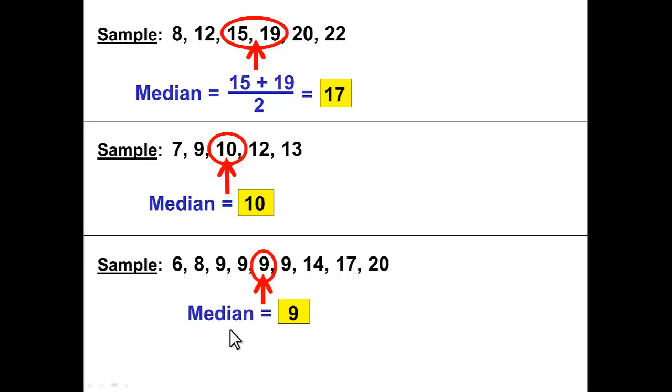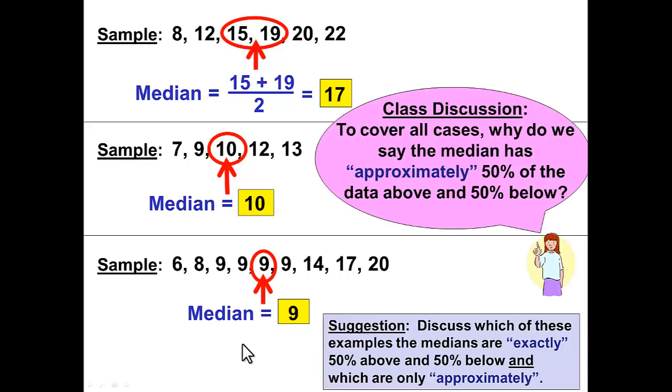Look at the third example here. Its median is 9. Well, 9 is one of the numbers and there's a 9 below and above. So that gets really confusing here. And if you want more detail, I'm not going to go into it on this video. But if you'd like to talk about it in a lot of detail, we can. But let's just say at this point to cover all cases, it's just more accurate to say approximately because that will cover the exactly as well as the approximate cases.